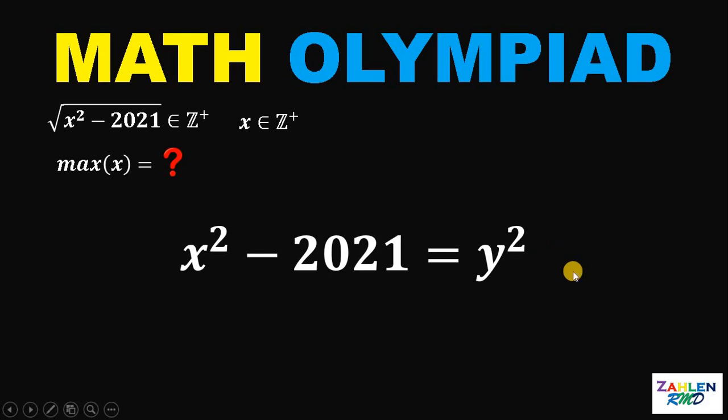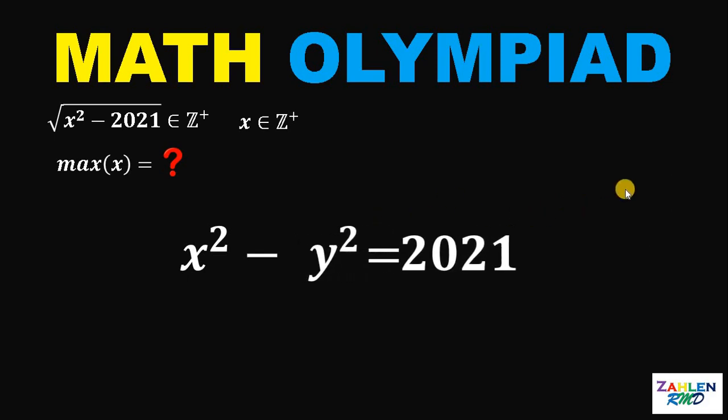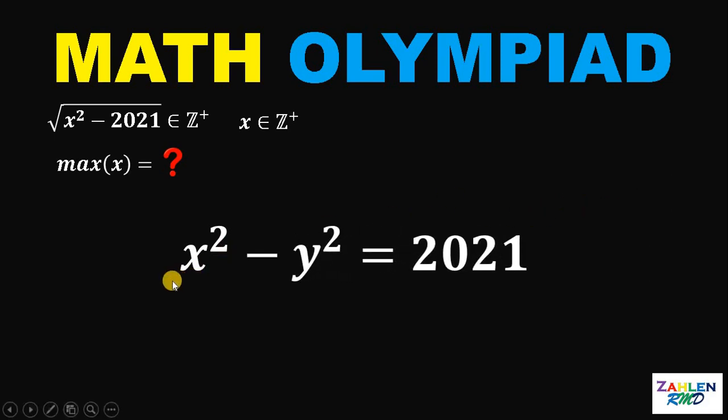Using this equation, we can manipulate this and solve for the values of x and y. So let's rearrange some terms. This is equivalent to x squared minus y squared equals 2021.